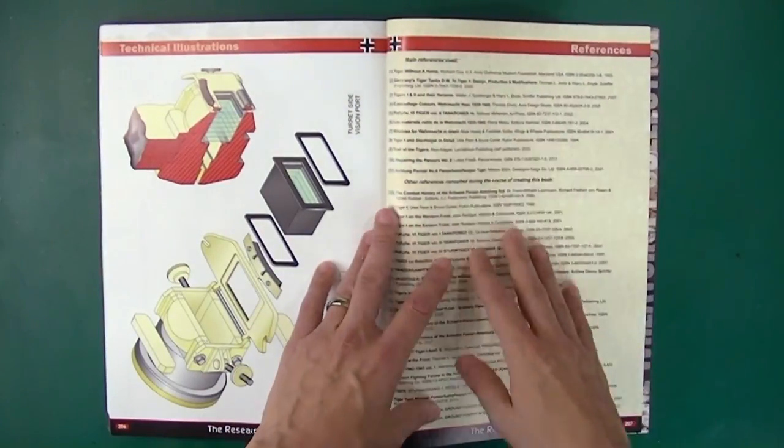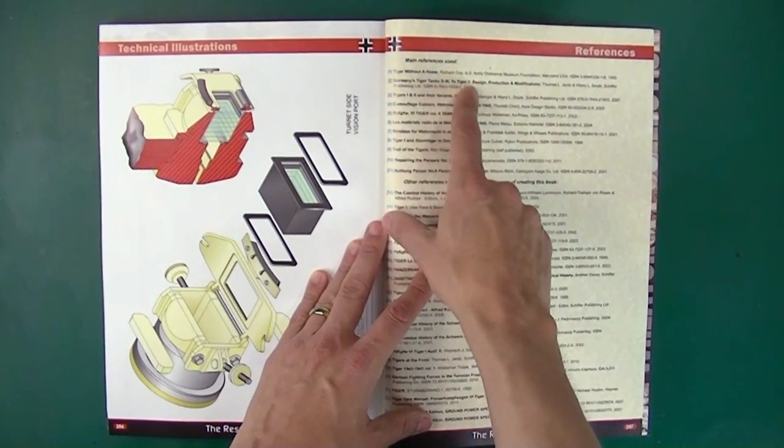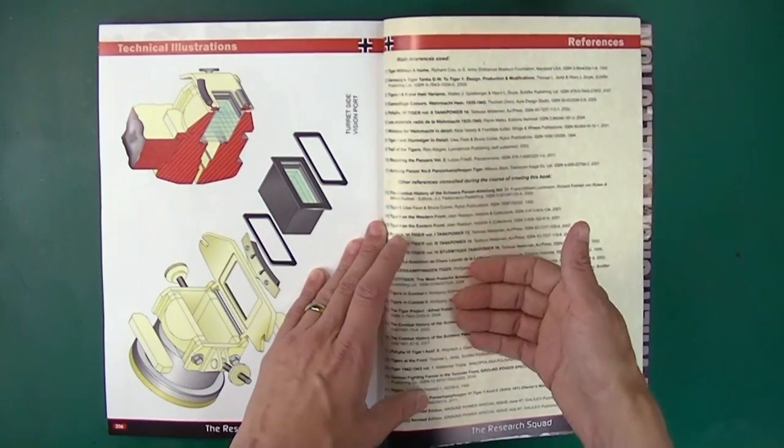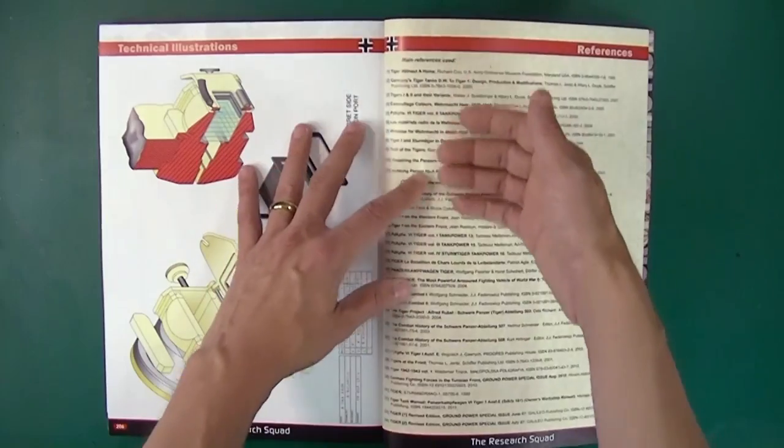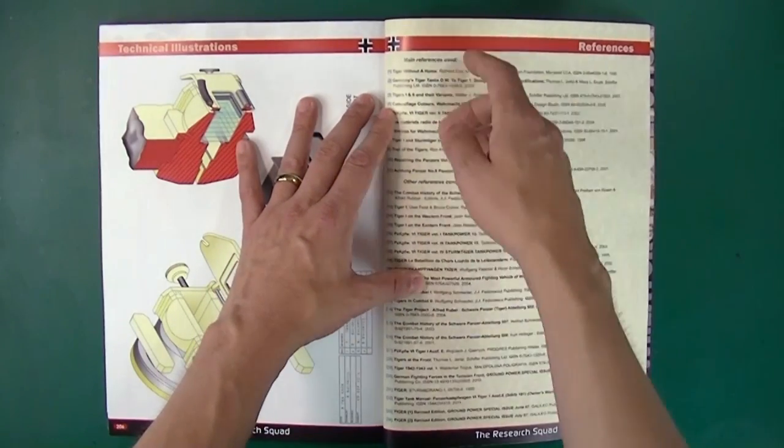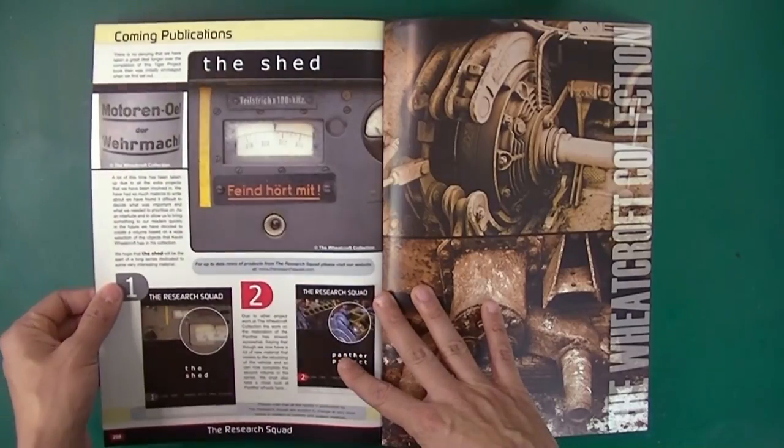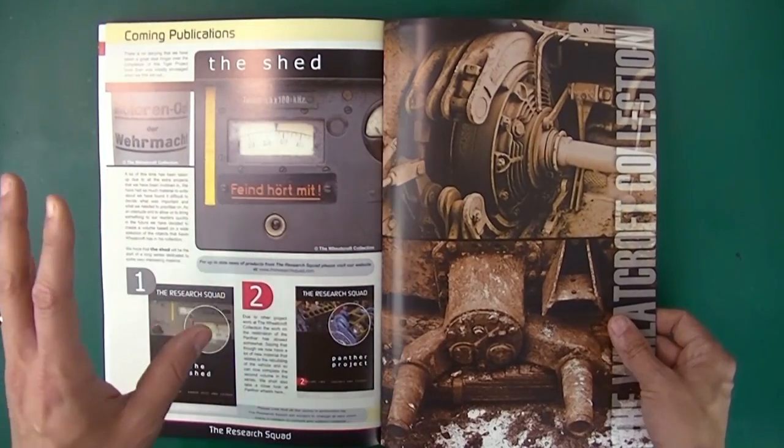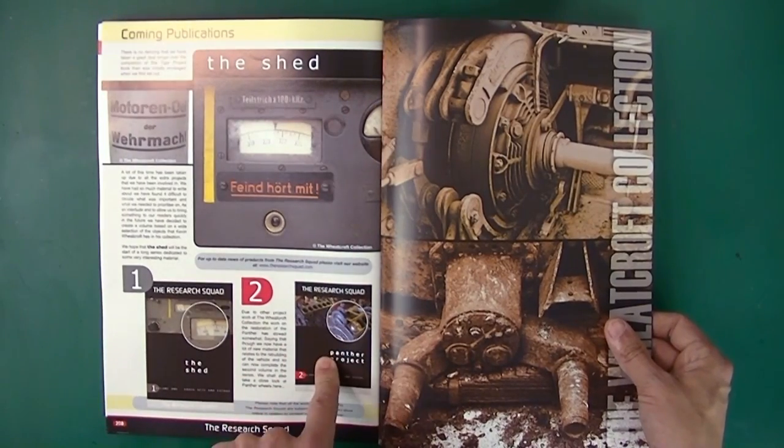So here are our references. Tiger Without a Home is a very famous book about this. Germany's Tiger Tank. DW to Tiger 1. Jentz and Doyle. You know so there, and then Tigers in Combat 1 and 2 are right here. So if this is everything that this person referenced, or these people, four of these books I own and are very famous Tiger books. And then they also are telling you they're going to do a Panther one coming up, which I very much look forward to.